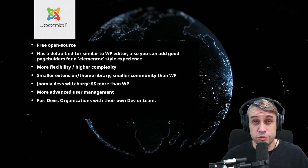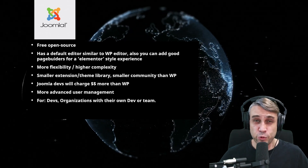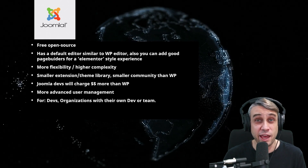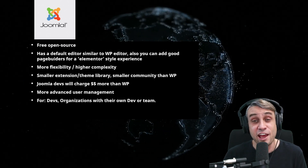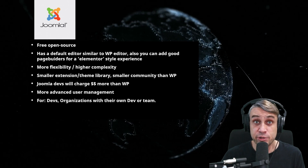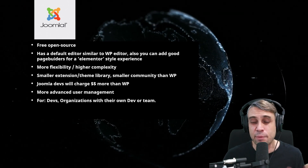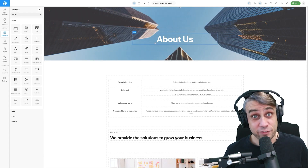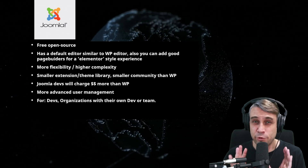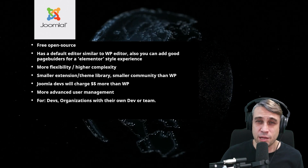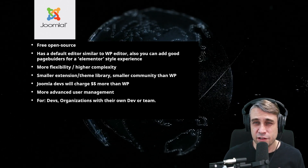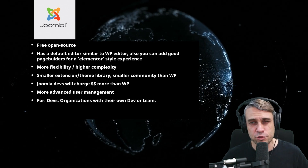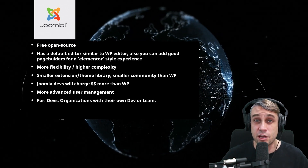Now let's talk about Joomla. Joomla is probably the closest thing to WordPress on this list — it's free and open source, same as WordPress, and has a default editor pretty similar to WordPress. You can also add page builders these days for an Elementor-style experience. The Joomla page builder is actually pretty similar to Elementor in terms of its interface. Joomla is probably a little bit more flexible than WordPress, but it comes at the price of higher complexity — I'd say it's more developer-level than WordPress.